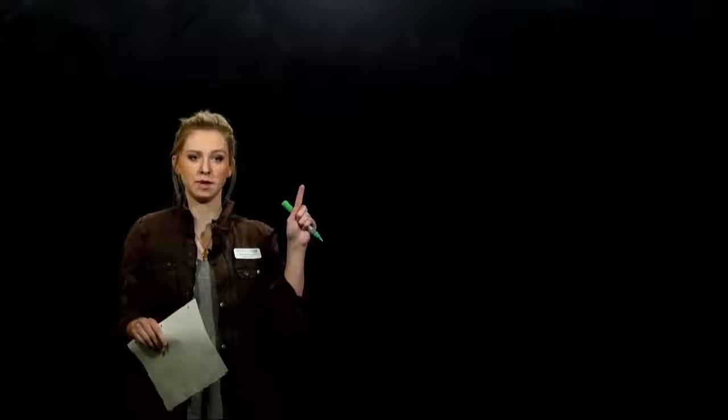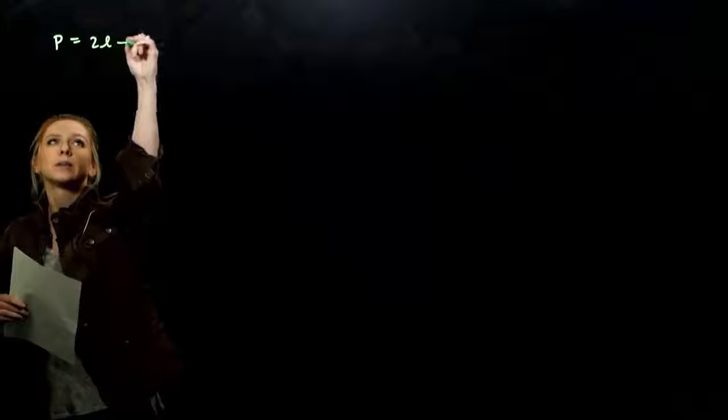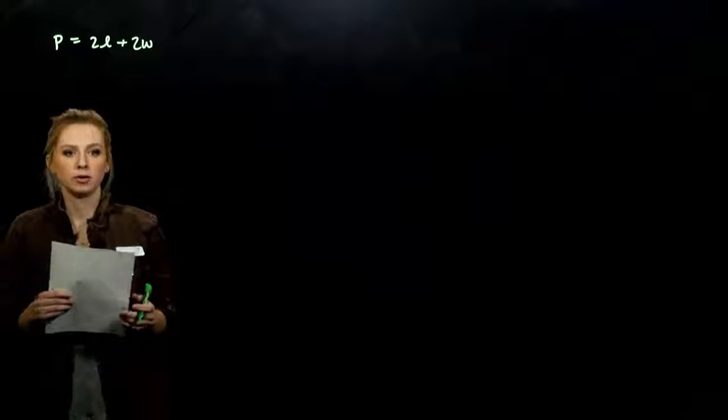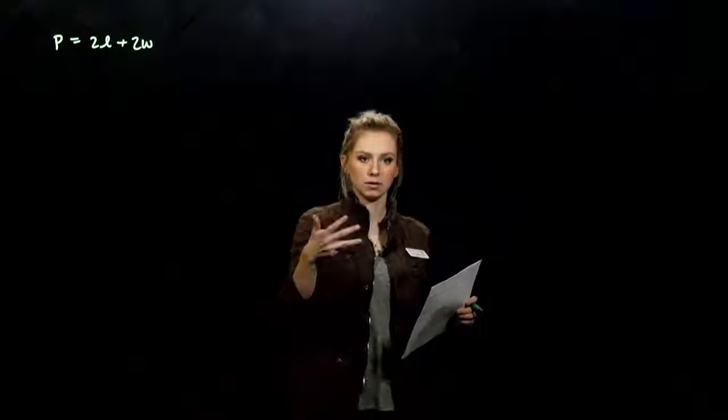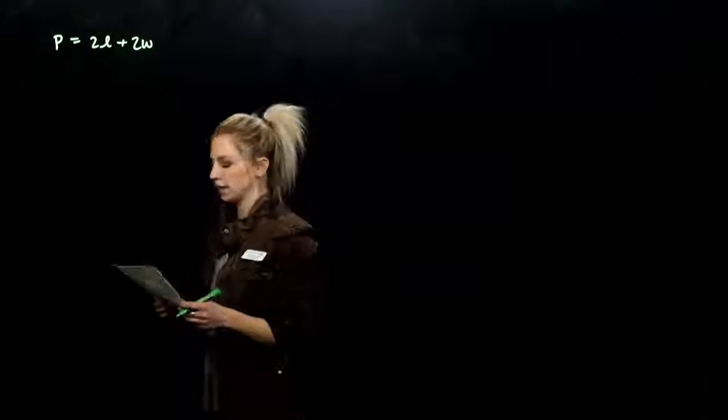So first of all we have to talk about what does it mean to be the perimeter of something - all the way around the outside. So my perimeter is 2 times the length, 2 times the width if I add up all the sides. So length, width, length, width. We can write it concisely like that.